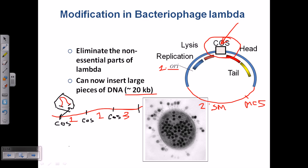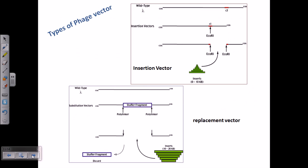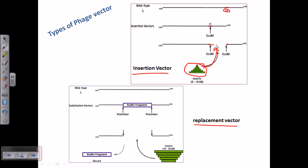There are two different types of phage vectors we can utilize. One is the insertion vector, and the other is called the replacement vector. In the insertion vector, there is a segment called cl, which is an integral part of this lambda phage and plays a vital role in controlling the lytic and lysogenic cycle. If this cl segment has an EcoRI restriction site within itself, we can treat this site with EcoRI so it can cleave and divide the chromosome into two parts. We then insert our gene of interest at this particular location to make our recombinant DNA molecule — that's why it is called the insertion vector.